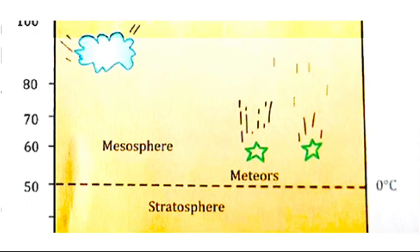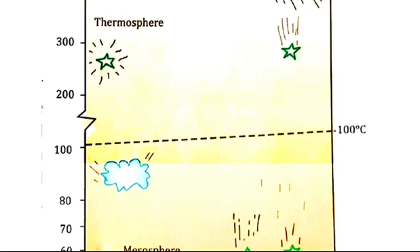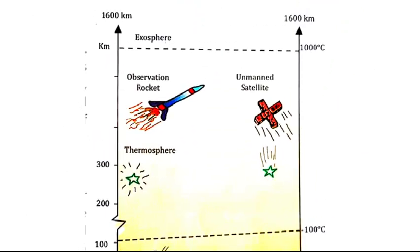The mesosphere is the layer just above the stratosphere. Above the mesosphere is the thermosphere. The last and outermost layer of the atmosphere is known as the exosphere.